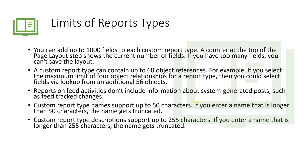For example, if you select the maximum limit of four object relationships for a report type, you could select fields via lookup from an additional 56 objects. So if you are creating a report type with four different objects and want more fields, you can add those fields via lookup from the additional 56 objects.